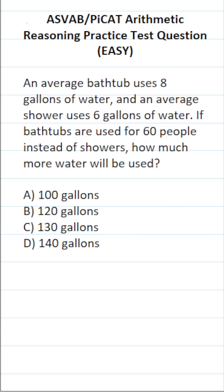This arithmetic reasoning practice test question for the ASVAB and PiCAT says an average bathtub uses 8 gallons of water, and an average shower uses 6 gallons of water. If bathtubs are used for 60 people instead of showers, how much more water will be used? So let's go ahead and work this one out.